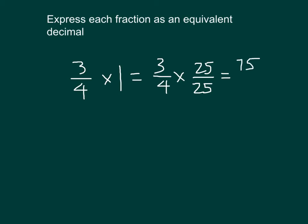3 times 25 is 75, and 4 times 25 is 100. So I have 75 hundredths, which I can write as a decimal within standard form as 0.75. So I've expressed this fraction, which was 3 fourths, as a decimal.